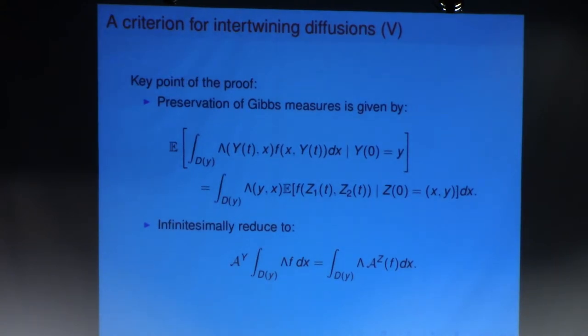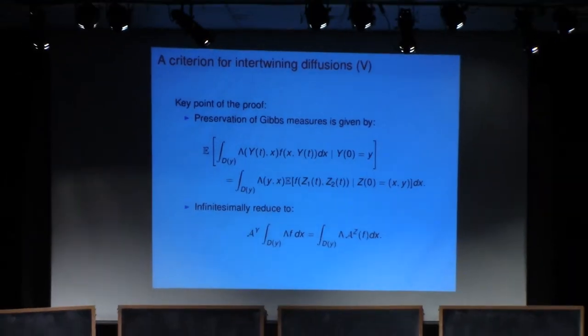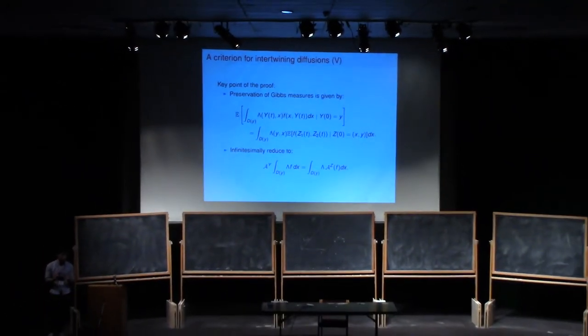Okay. And so I want to talk a little bit, just very briefly, about how to prove this result. So first, the only thing that you need to prove is actually, or the key point that you need to prove, is that the process Z is going to preserve Gibbs measures.